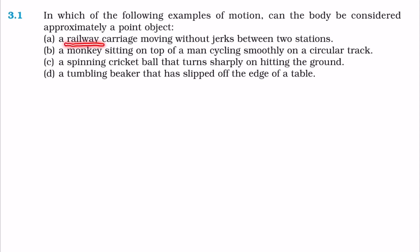The four options are: first, a railway carriage moving between two stations; a monkey sitting on top of a man cycling smoothly on a circular track; a spinning cricket ball; and a tumbling beaker. We have to define which of these qualify.